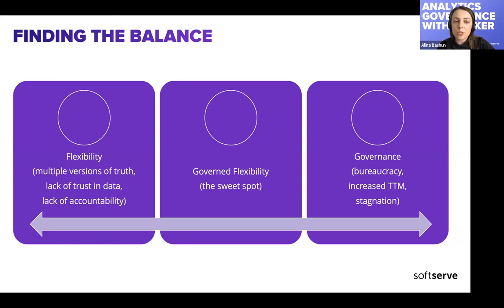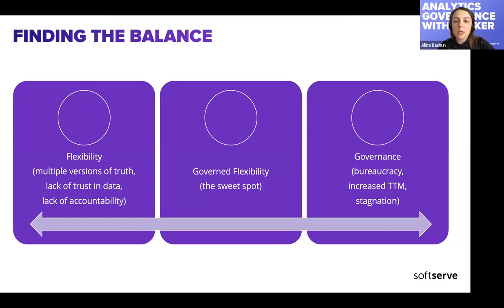Someone will eventually spot it, and you'll spend extra effort to understand why the figures differ, what the root cause is, and who is accountable. On the other side, if you introduce 100% governance and make your environment fully governed, it will become a bottleneck. It won't help the organization scale or grow, it will kill creativity and can bring stagnation — if all models and analytics are predefined and no one can change anything, with zero flexibility.